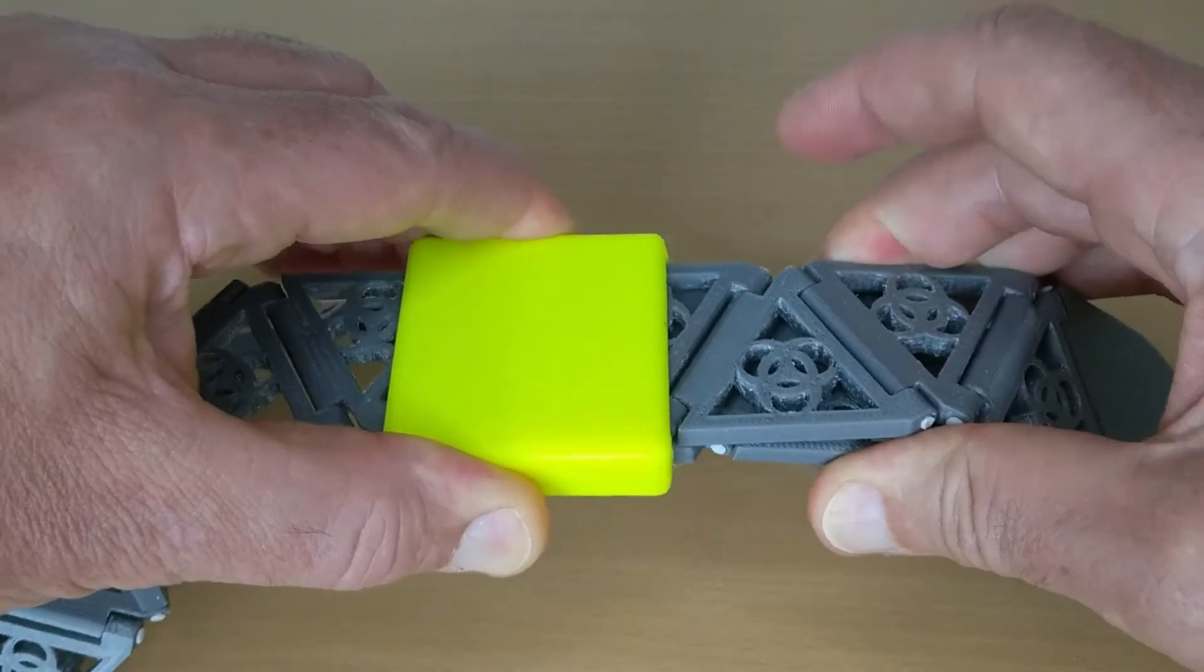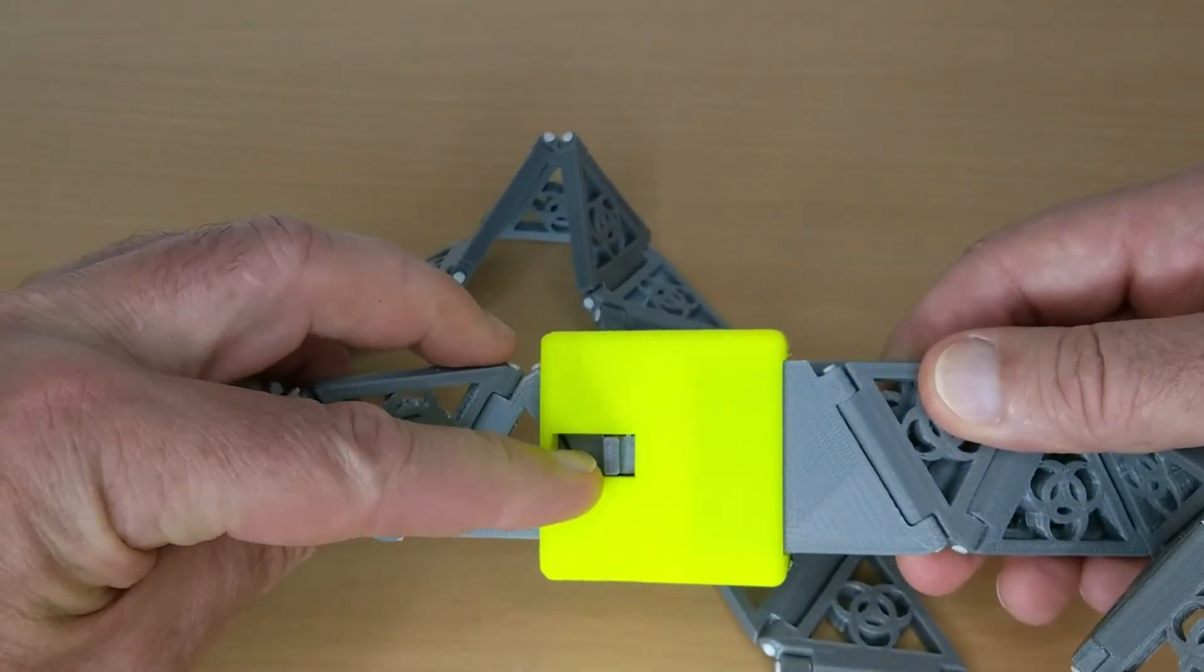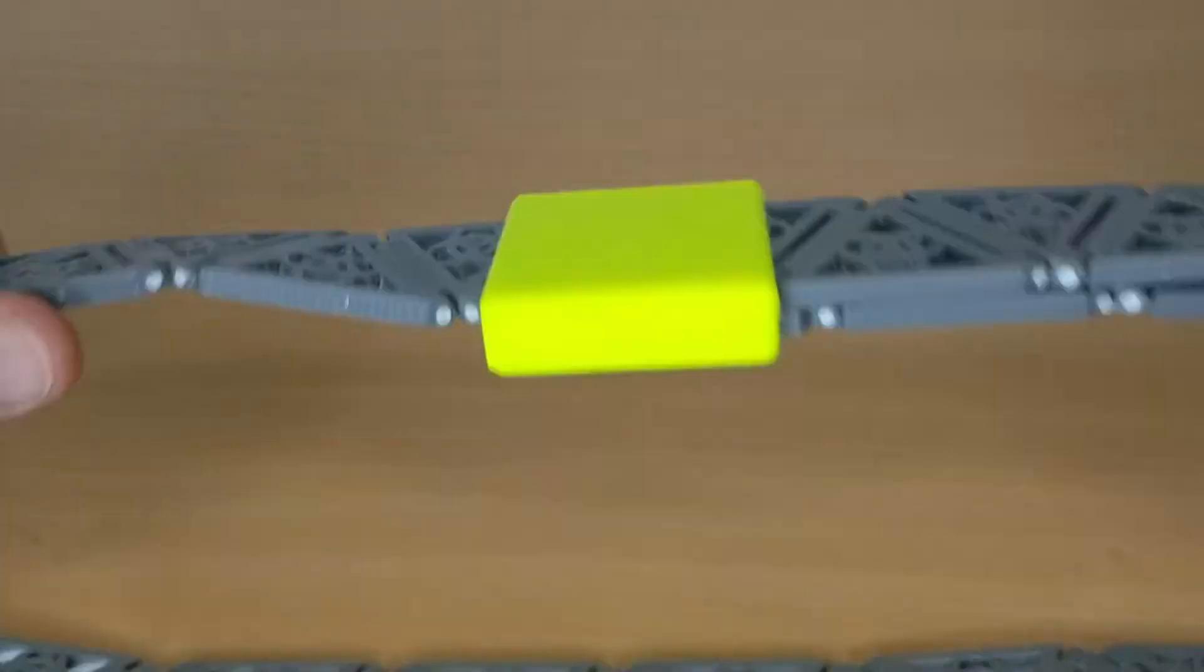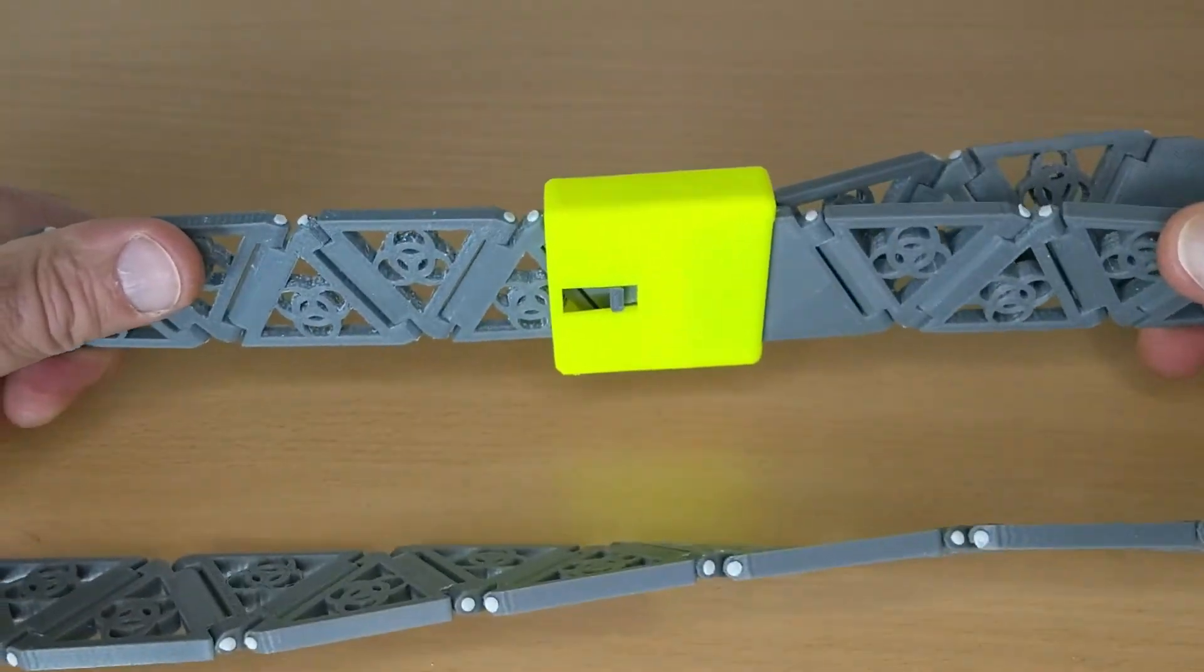Pull with the other hand the outer buckle firmly away from the connected belt side. This locks the belt inside the buckle.